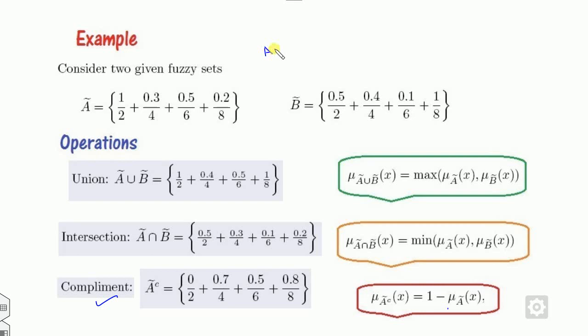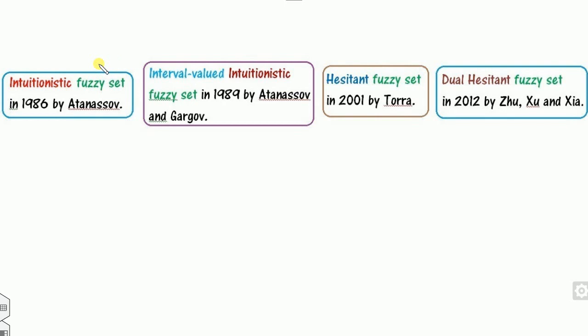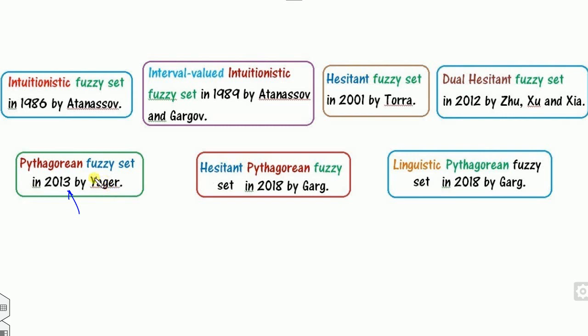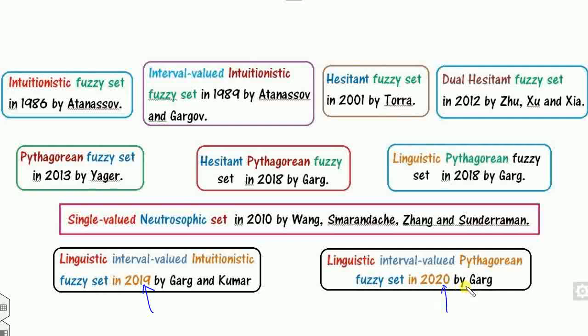There are several extensions we will discuss here. The first is the intuitionistic fuzzy set, which came into the picture in 1986. After that: interval-valued, then hesitant, then dual hesitant — all working on the intuitionistic fuzzy environment. Later, the Pythagorean fuzzy set came in 2013 by Yager. In 2018, I presented the hesitant Pythagorean fuzzy set. Again in 2018, I presented the linguistic Pythagorean fuzzy set. Further, the neutrosophic set was presented in 2010. Recently in 2019 and 2020, I presented the linguistic interval-valued intuitionistic and linguistic interval-valued Pythagorean. Let's discuss one by one in detail.